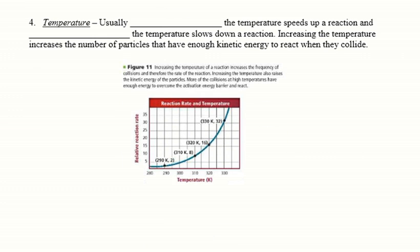The fourth factor is temperature. Usually increasing the temperature speeds up a reaction, and decreasing the temperature slows down a reaction. If you increase the temperature, you increase the average kinetic energy of the particles. They have more energy to collide, so they have more collisions and more effective collisions. Here we see as the temperature goes up, the rate of reaction also goes up. We put food in a refrigerator or in the freezer to slow down the rate of spoiling. The lower the temperature, the lower the rate of reaction.